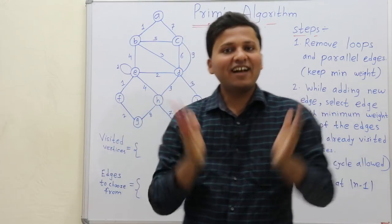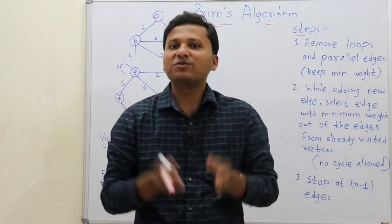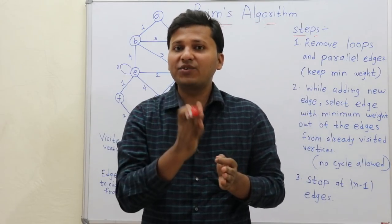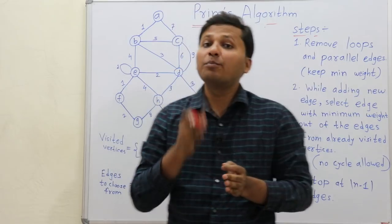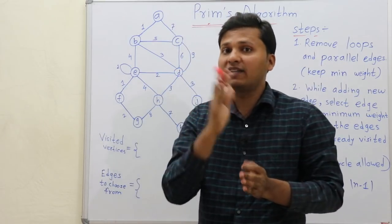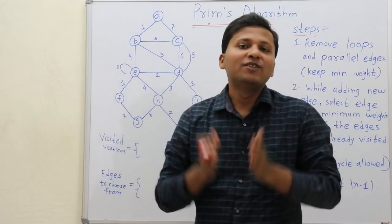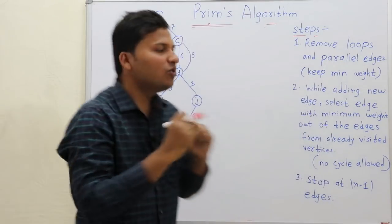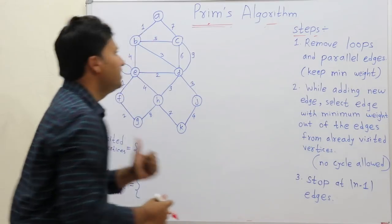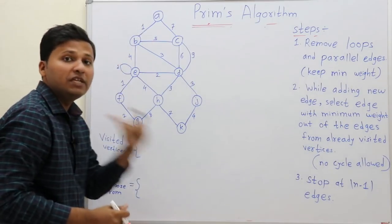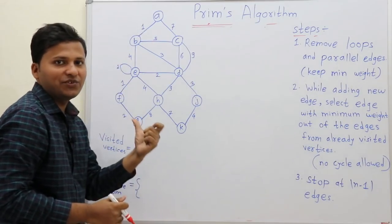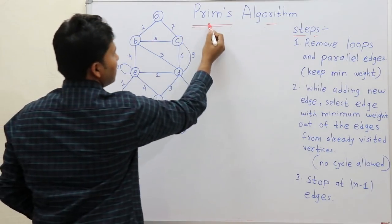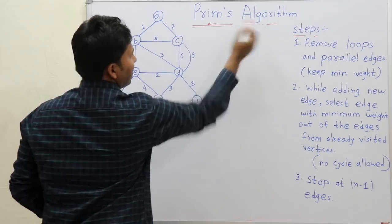Hey guys, in the last video we have seen what is a spanning tree and a minimum spanning tree. Today we are going to see an algorithm for finding out the minimum spanning tree. The name of the algorithm is Prim's algorithm.